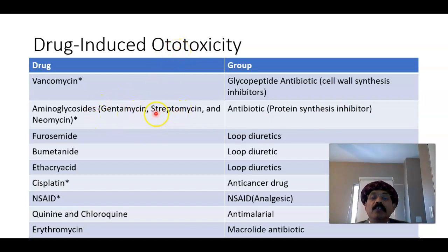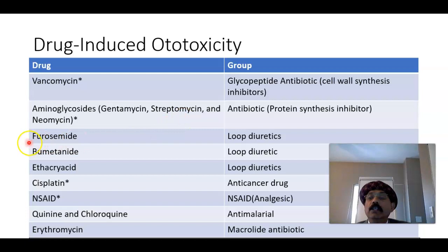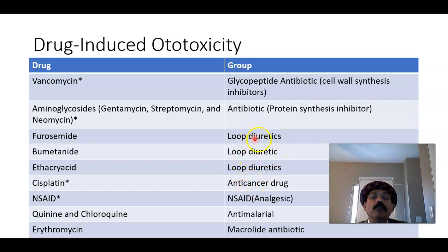Streptomycin is an antibiotic and also a well-established anti-TB drug. Furosemide, bumetanide, and ethacrynic acid are all loop diuretics — they work in the loop of Henle of the nephron — and they are associated with ototoxicity as an adverse effect.